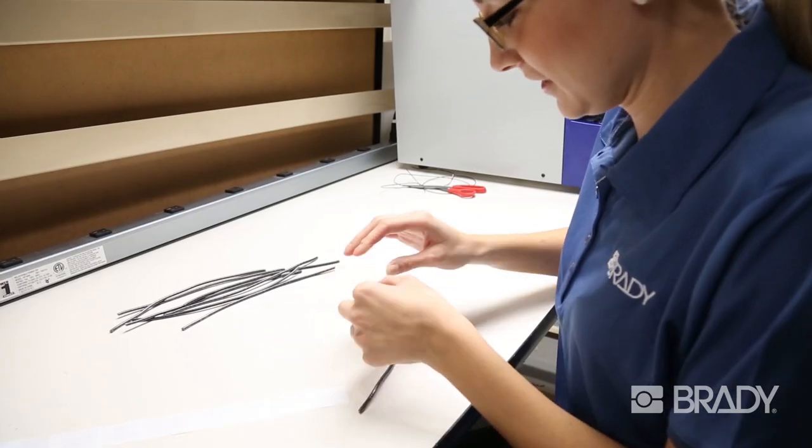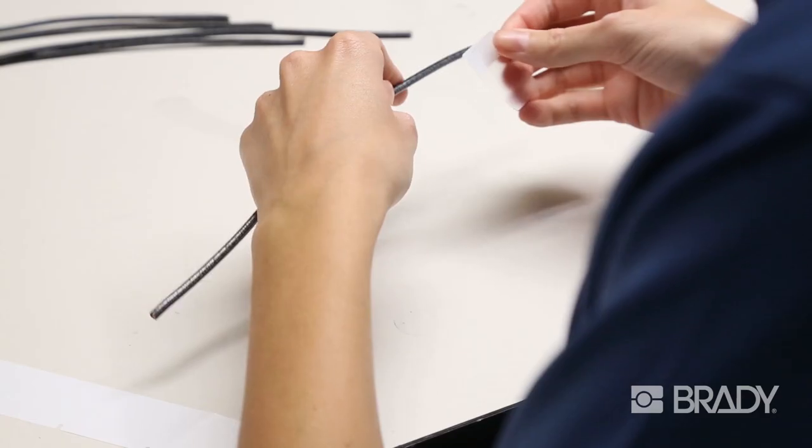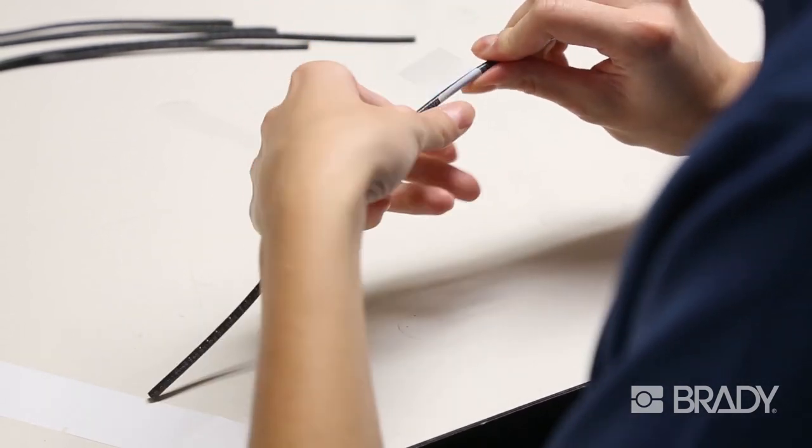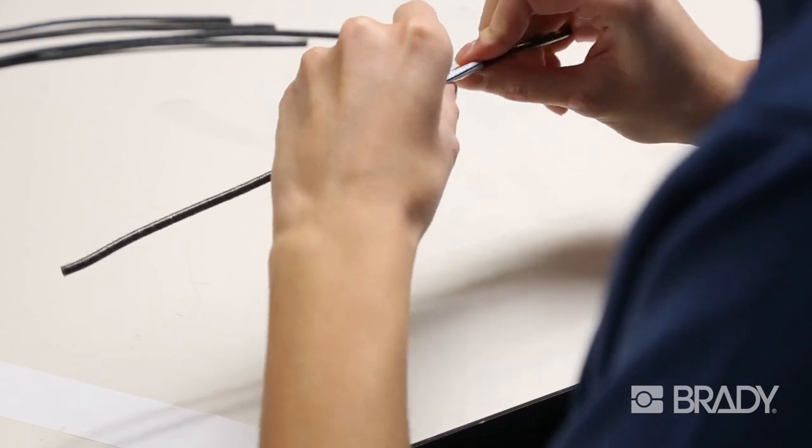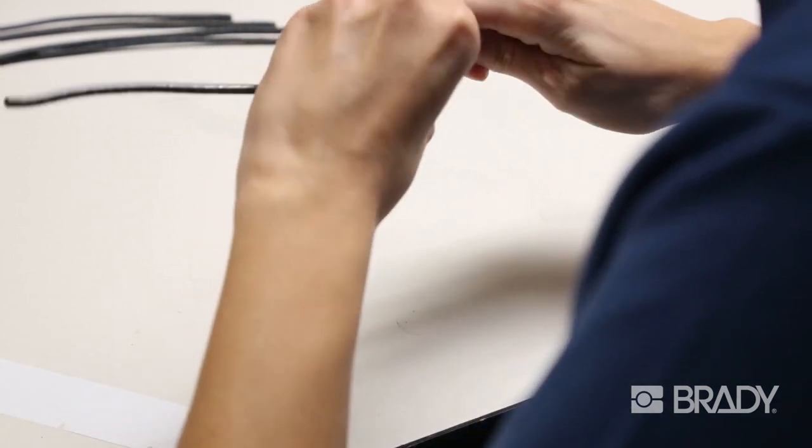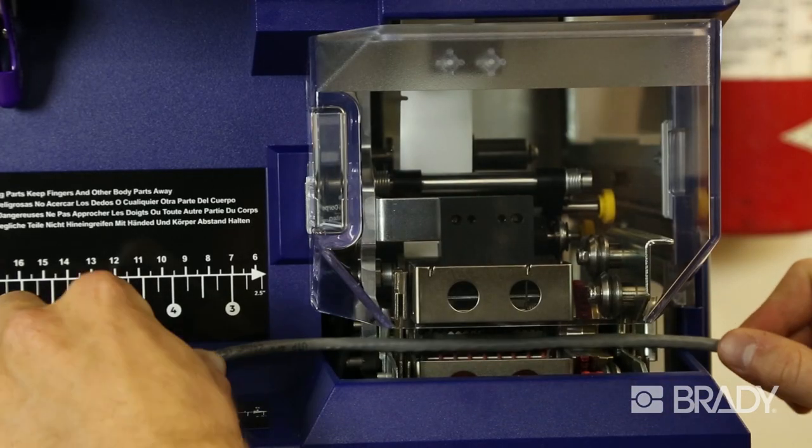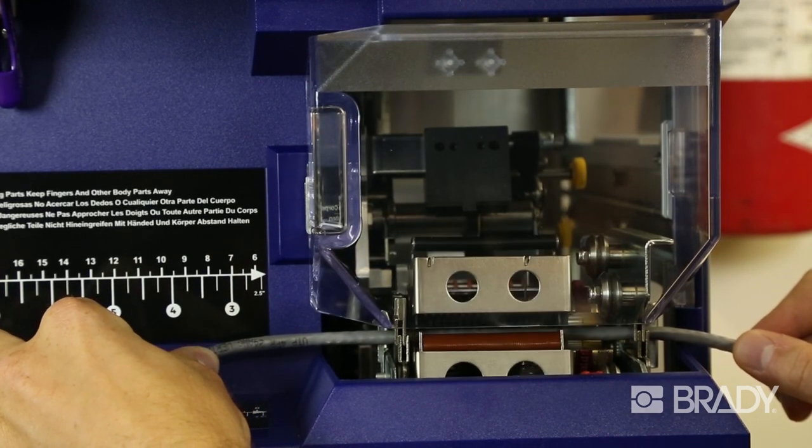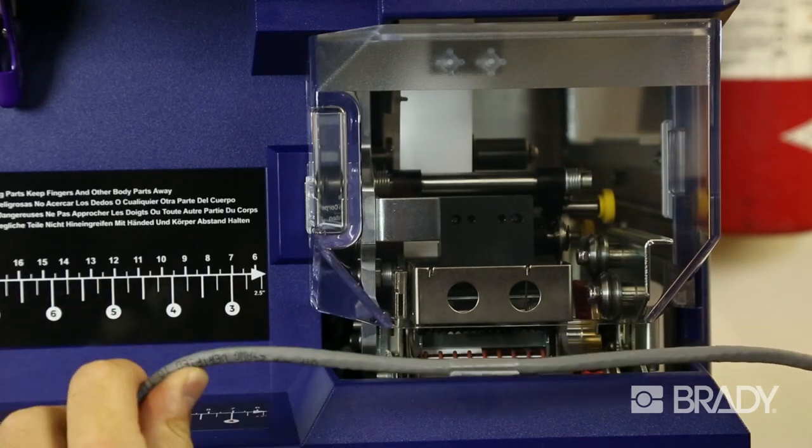Wire labeling can be a slow, tedious process. Over time, operators can improve their output, but even the most seasoned labeler can't match the speed of the Raptor A6500. The Raptor A6500 prints and applies labels in 5 seconds or less—up to 10 times as fast as hand applying after printing.